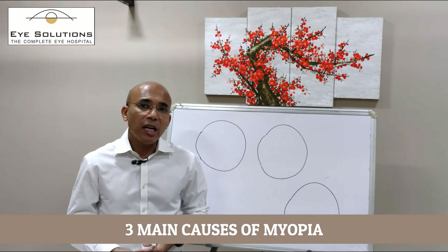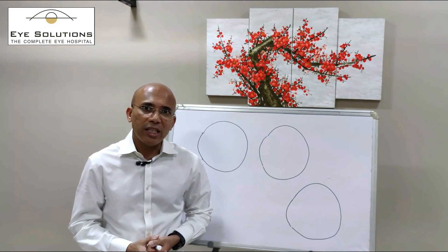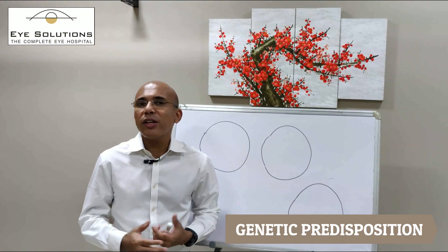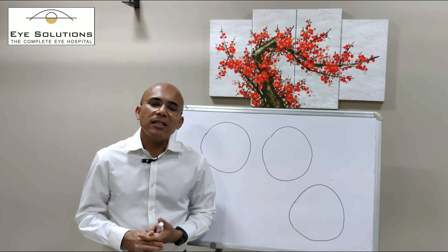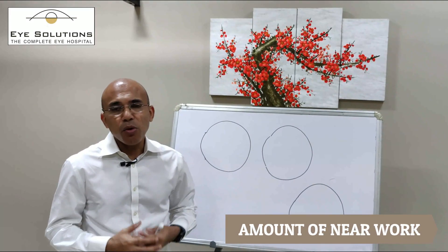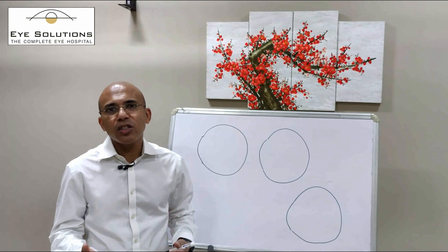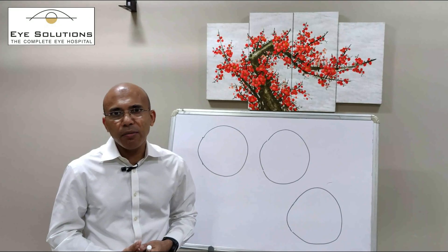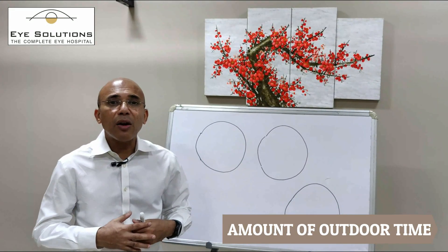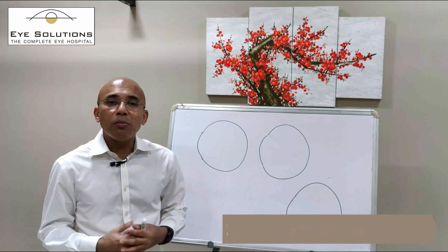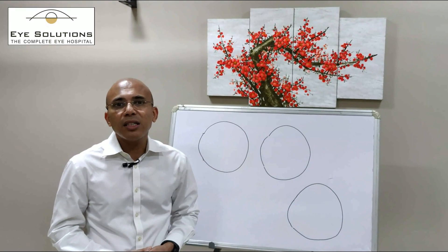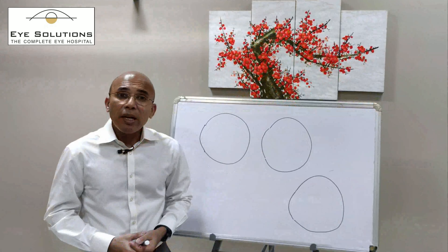There are three main causes of myopia, apart from a few others. The first is genetics, which you can't really do much about. The second is the amount of near activity that you do — the more the near activity, the higher the chance that you will develop myopia. And the third is the amount of outdoor activity that you do, so the more the time you spend outdoors, the lesser the chance that you will develop myopia.